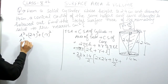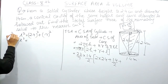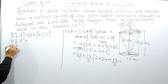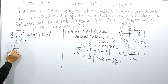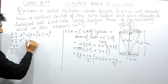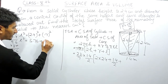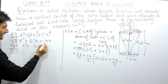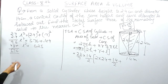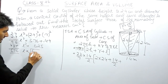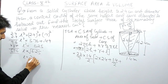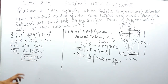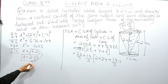So l² = 5.76 + 0.49 = 6.25. Therefore l = √6.25 = 2.5 cm. This is how you find the value of the slant height l.